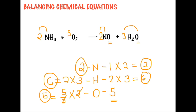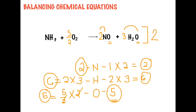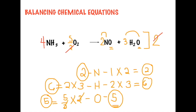We write 5/2 on the reactant side for O2. However, in balancing chemical equations, fractions are not allowed because there are no fractions of an atom. So to get rid of the fraction, we multiply the whole equation by the denominator, which is two. So 2 × 2NH3 gives us 4NH3. Then 5/2 × 2 cancels to give us 5O2. We have 2 × 2NO giving us 4NO, and 2 × 3H2O giving us 6H2O.